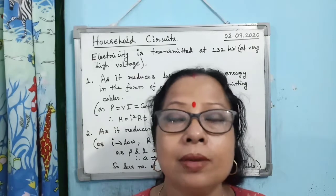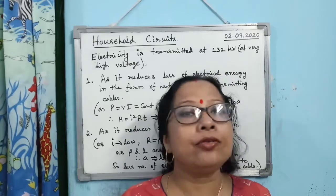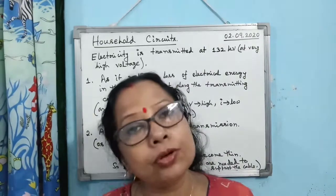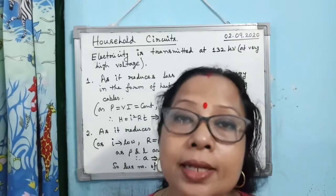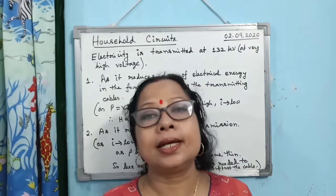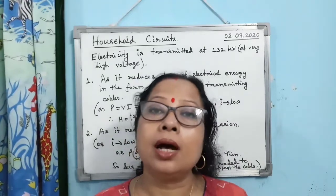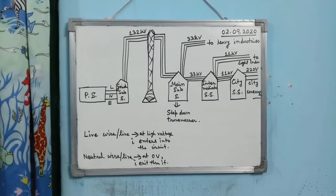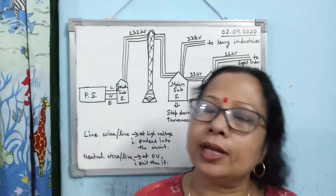So the second important question from this chapter is: at which voltage is electric power transmitted, and why? The answer is: electric power is transmitted at 132 kilovolt — first, because it reduces the loss of electrical energy in the form of heat energy along the transmitting cable; and second, because it reduces the cost of transmission.